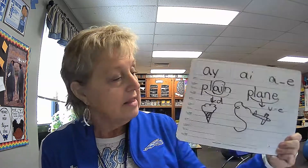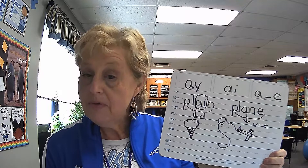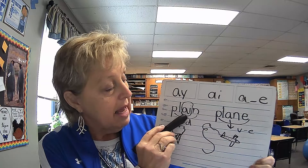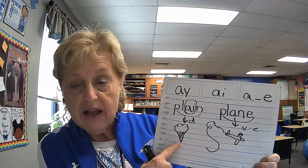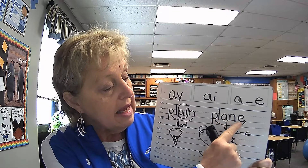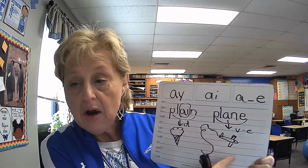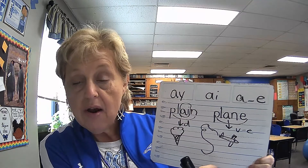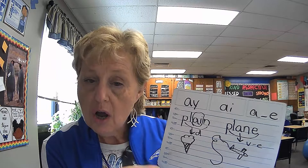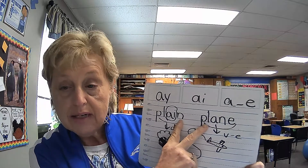Now yesterday, I showed you that words can sound the same but be spelled differently and have different meanings. I used the example plain, P-L-A-I-N, as in plain vanilla ice cream, and plane, P-L-A-N-E, vowel consonant E, to mean an airplane flying in the air. You cannot hear a difference between the two.